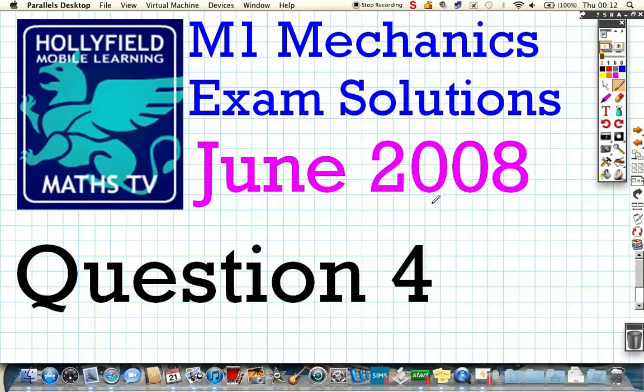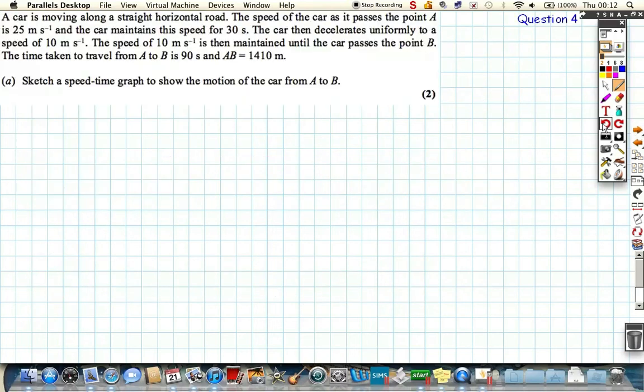Okay, question 4 from the June 2008 examination. Let's take a look at it. It says a car is moving along a straight horizontal road and it gives us various different details and we're asked to draw a speed time graph.